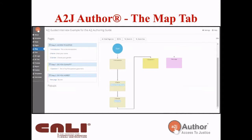Next is the Map tab. It should be familiar to anyone who's used A to J 4, though it doesn't have the visual representation of the question like the Flash version did. Our map is an ongoing project — if you use the map a lot, we'd love to hear how you're using it. The map gives you a forest-for-the-trees view: you can see how everything branches together, how questions are connected, and the little icons showing what's in your guided interview questions.